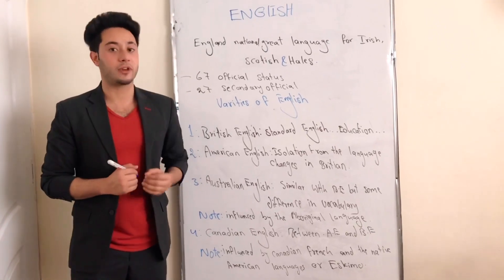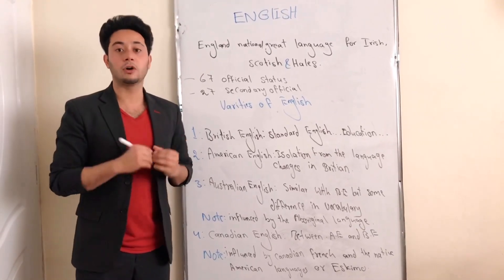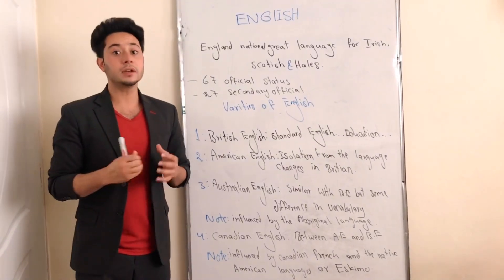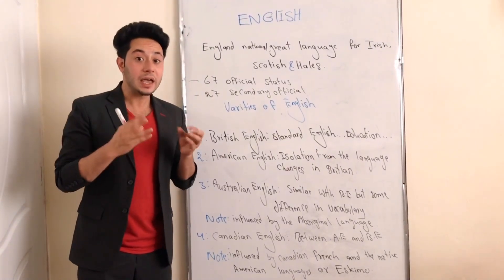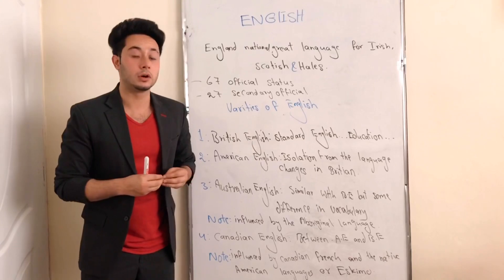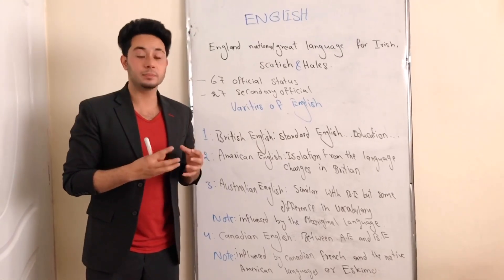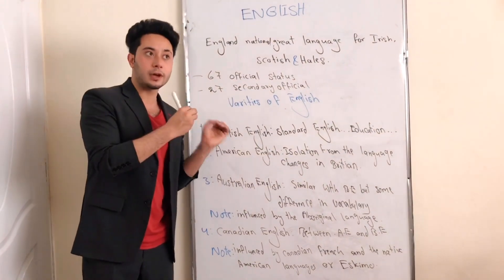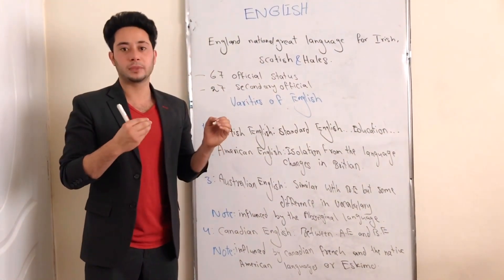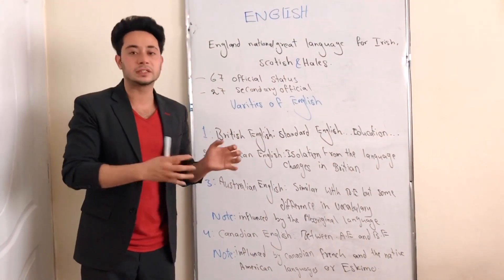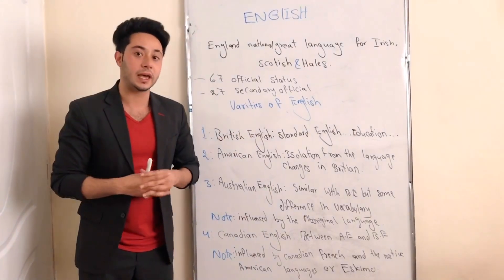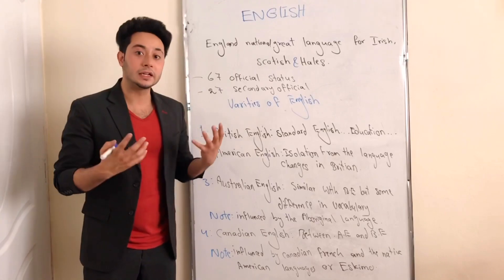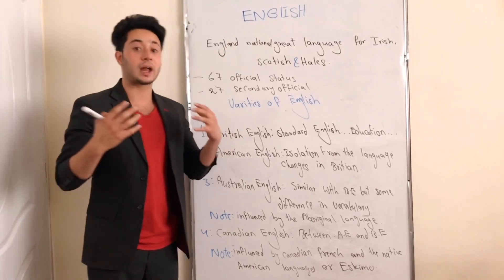The third variety of English is called Australian English. Australian English is a form of English which is completely similar to British English. Because those people who were living in Britain emigrated and started living in Australia, they use English as their native or national language.